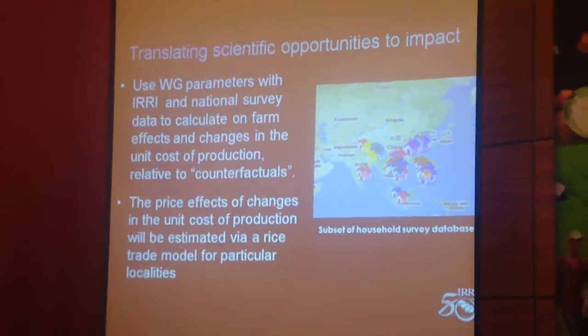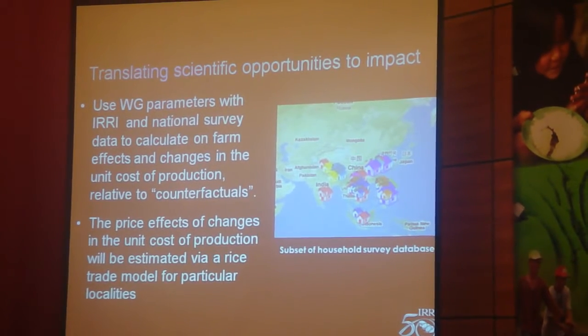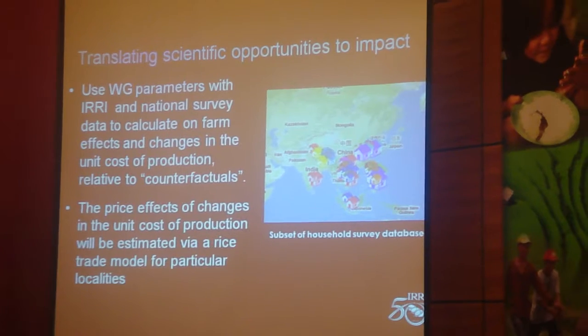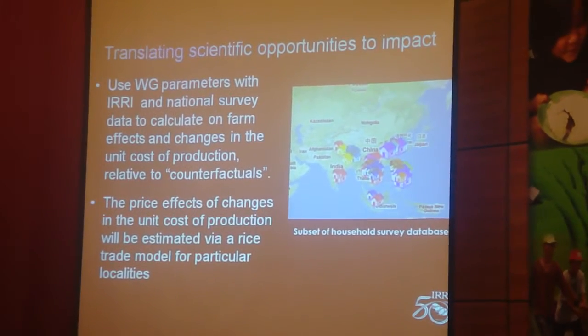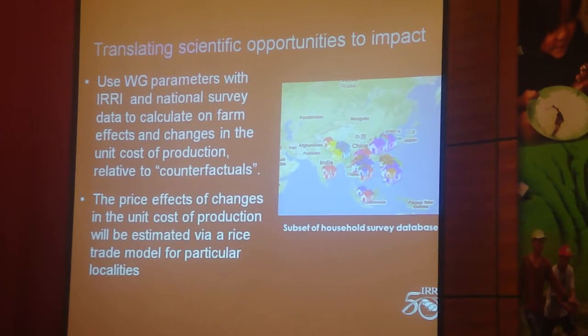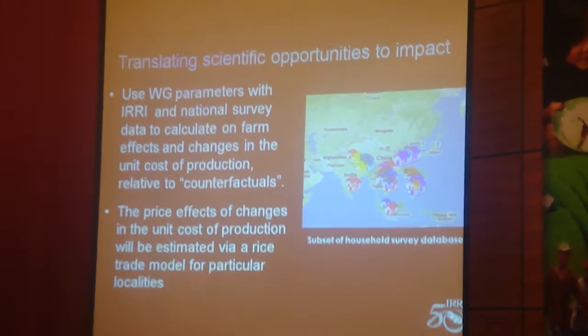We'll take those estimates, which are generally in relative terms in terms of effects on input use and different elements of production costs. We have an extensive in-house survey database covering many different Asian countries that we're going to use to get the baseline values in terms of input-output use by operation. We can then translate those relative changes into absolute changes and look at what the unit cost of production is and how it's being shifted by particular technologies, taking into account the adoption trajectory over time.